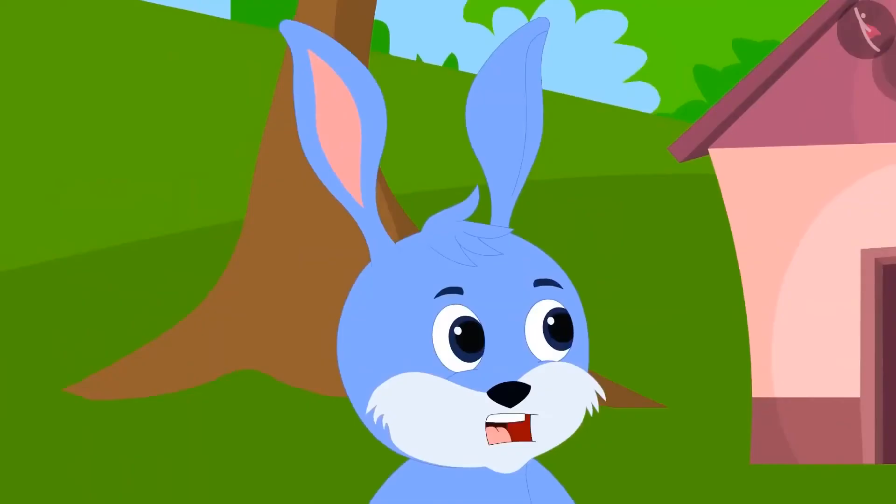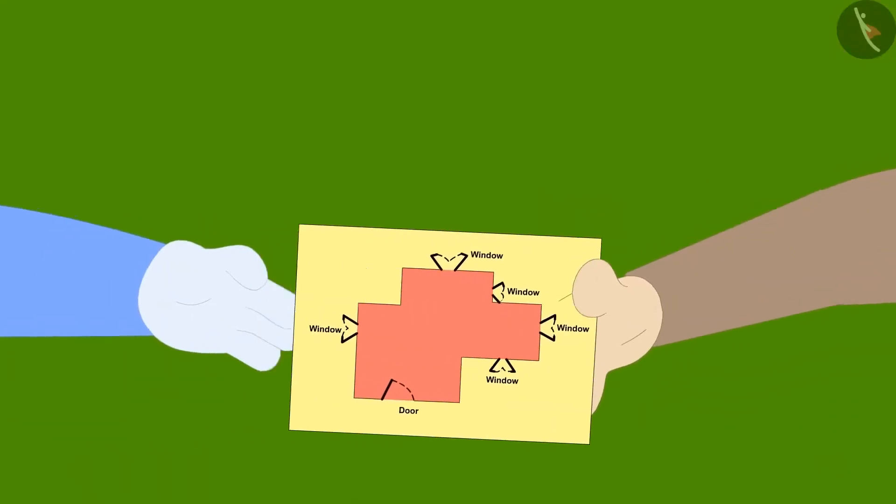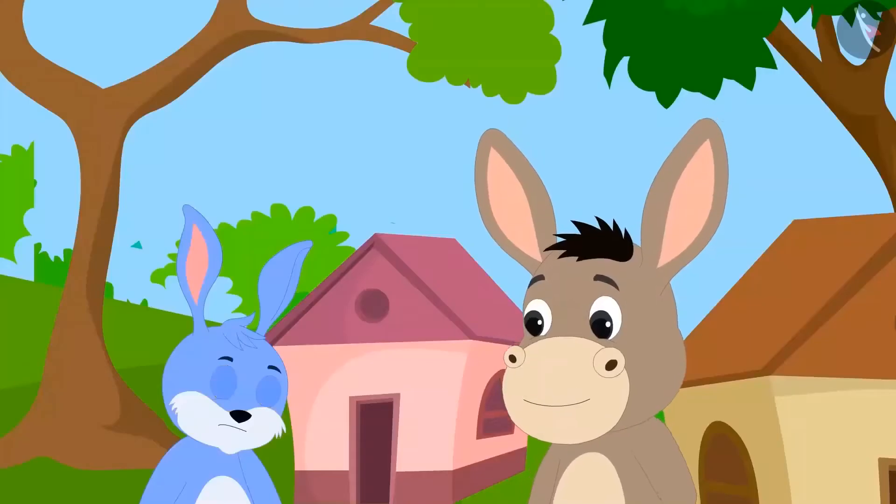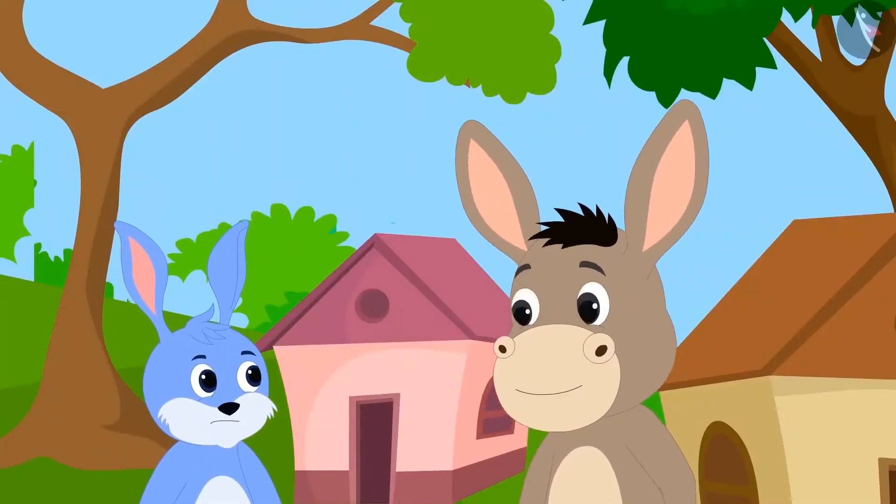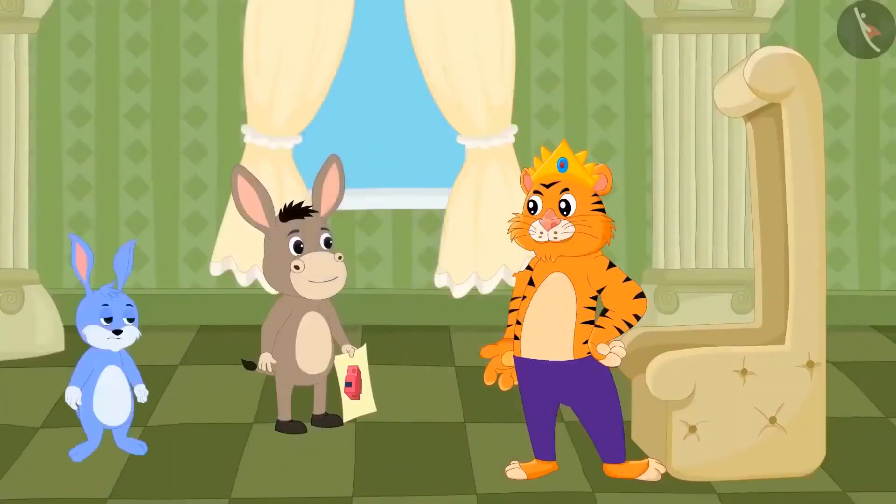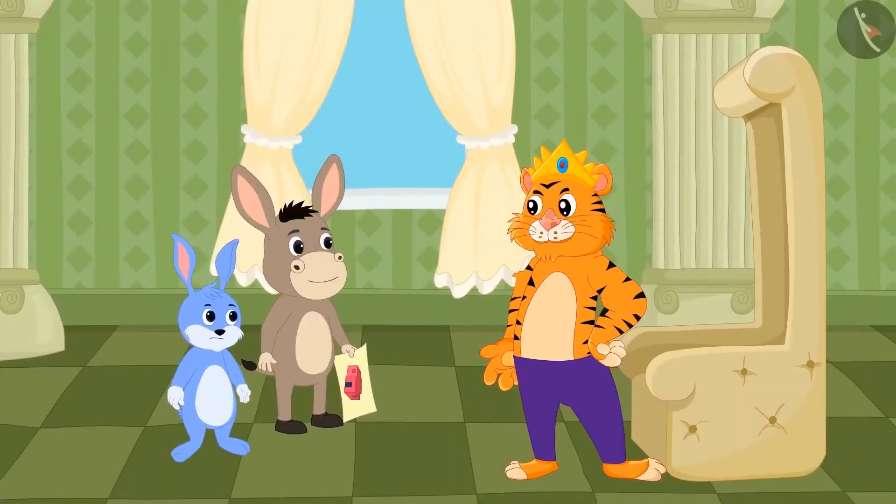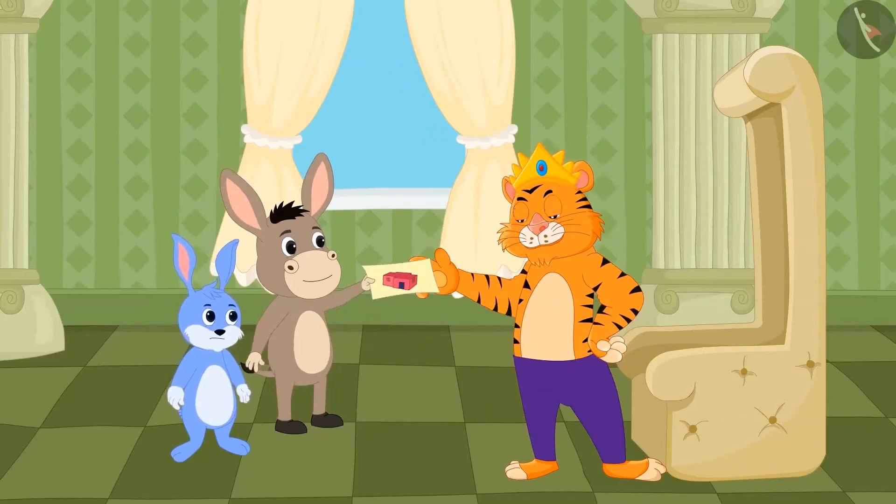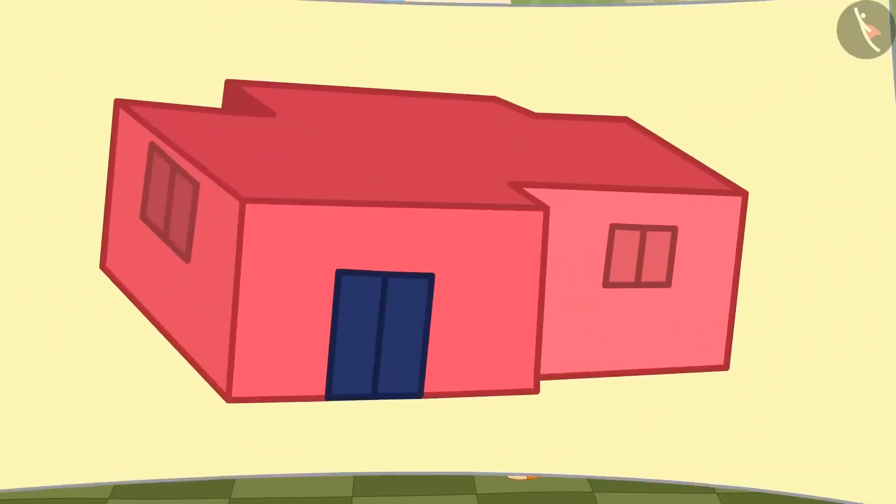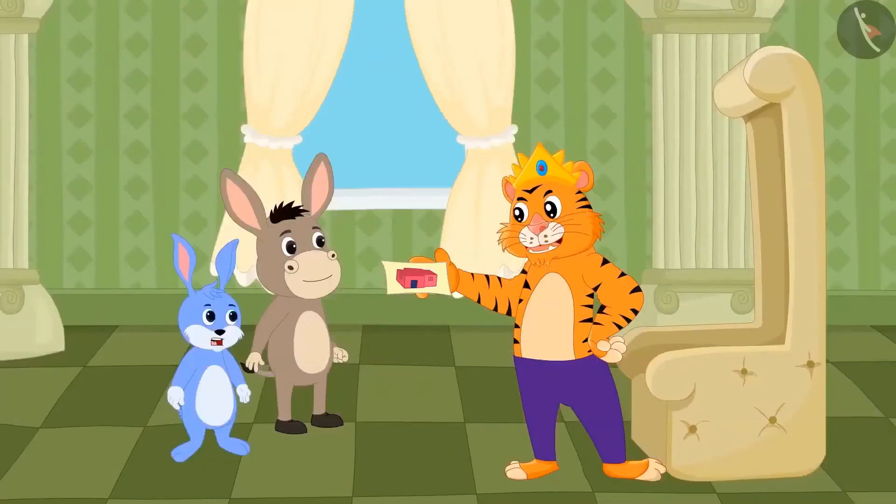Bholla told Bunny that he could help him. Bholla asked Bunny to show the map of the floor and to come with him to the king's court the next day. The next day, Bholla and Bunny reached the king's court. Bholla showed the king such a picture of his room design that Bunny and the king were shocked.